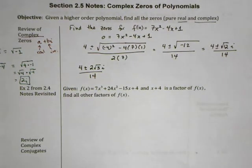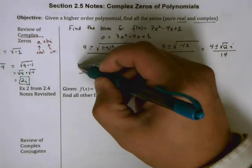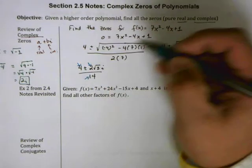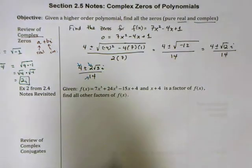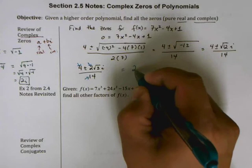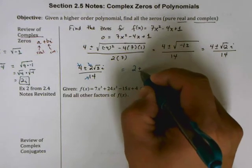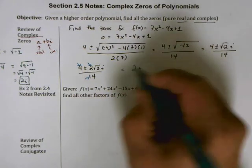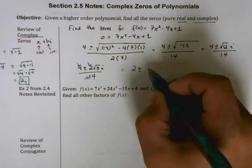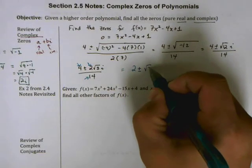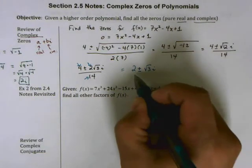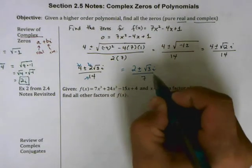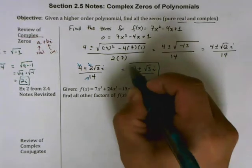I can simplify these terms. Divide 4, 2, and 14 all by 2, and I get 2 plus or minus—this 2 reduces down to 1—so this is just √3i divided by 7. This is my final answer.